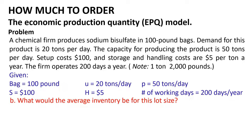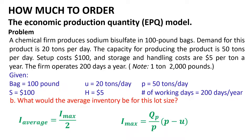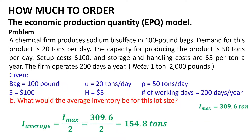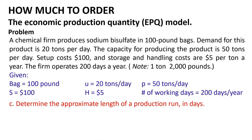The second question is what the average inventory would be for this lot size. The average inventory equals I_maximum / 2, and I_maximum = Q_p / p × (p − u) = 516 / 50 × (50 − 20) = 309.6 tons. Consequently, the average inventory equals 309.6 / 2 = 154.8 tons.